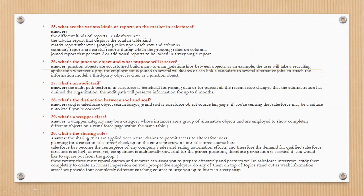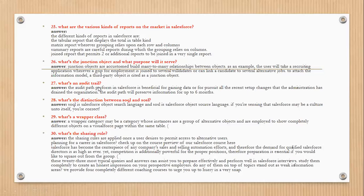The next question is: what is a junction object and what is its purpose? Junction objects are custom objects used to create many-to-many relationships between objects. For example, in an application where a group of employees is linked to a server, or where candidates are linked to alternative job positions, a third-party object can serve as the junction object to attach and link the information.